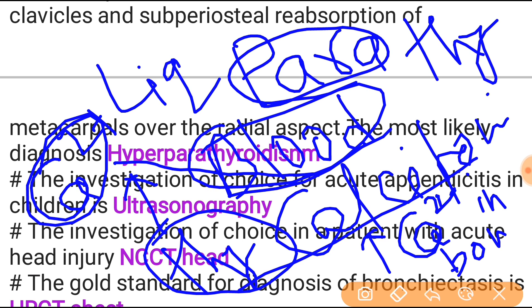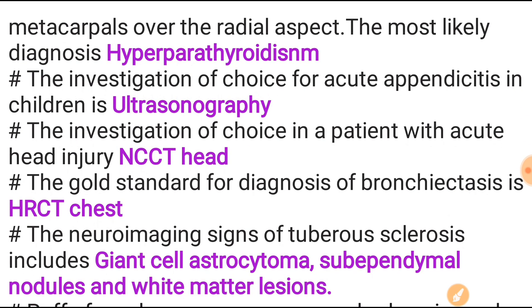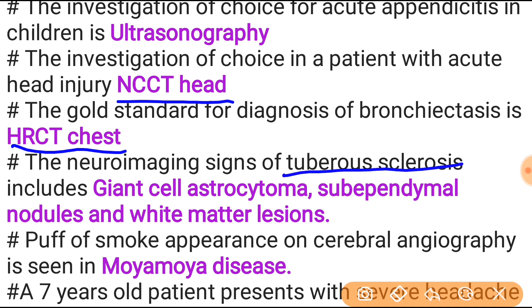Investigation of choice for acute appendicitis in children is ultrasonography — already repeated. Investigation of choice in a patient with acute head injury is NCCT of head. Gold standard for diagnosis of bronchiectasis is HRCT (high resolution CT scan). Neuroimaging signs of tuberous sclerosis include giant cell astrocytoma, subependymal nodules, and white matter lesions.